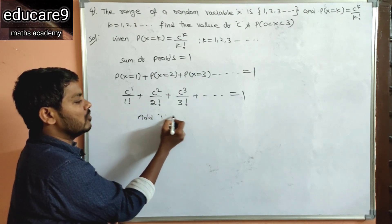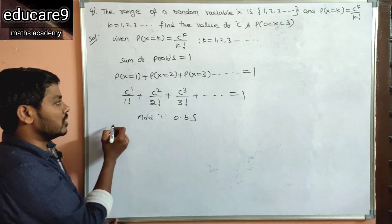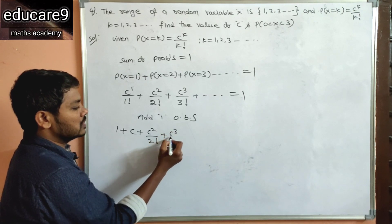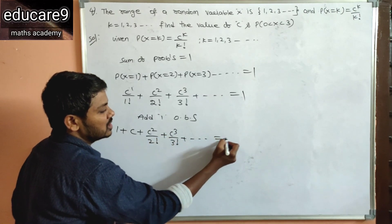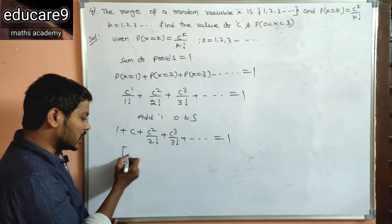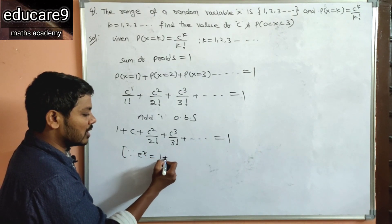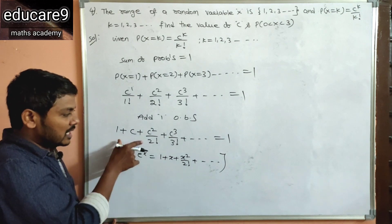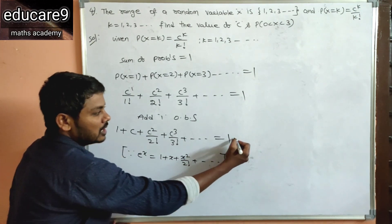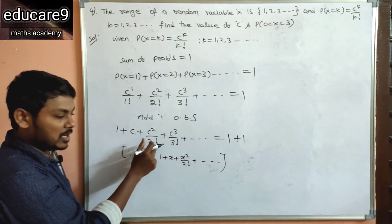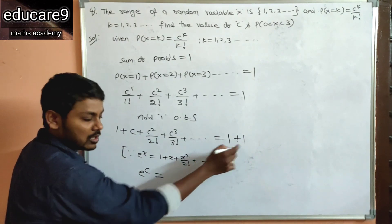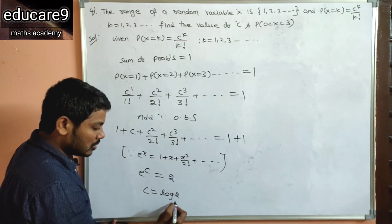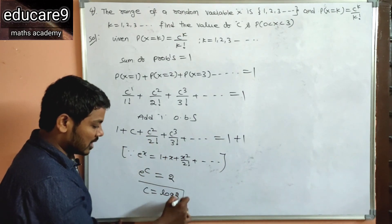Adding 1 to both sides: 1 + c + c²/2! + c³/3! + ... = 2. We know the expansion e^x = 1 + x + x²/2! + ... So this left side is e^c = 2. Therefore c = log 2 (natural log), i.e., c = ln 2.